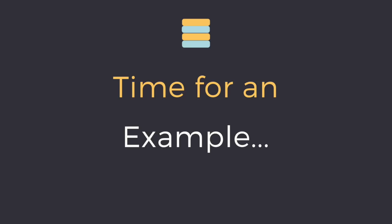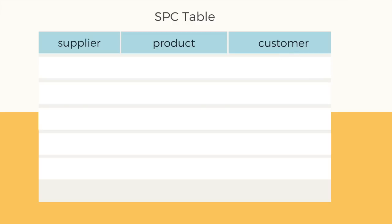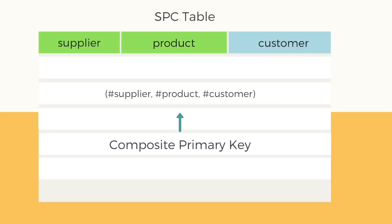Let's take an example to understand the fifth normal form. Here we have a table with three columns: supplier, product, and customer. The table has a composite primary key which is made of three attributes — supplier, product, and customer. Let's fill in some data in the table.